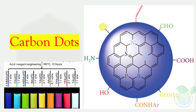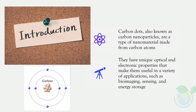Introduction. Carbon dots, also known as carbon nanoparticles, are a type of nanomaterial made from carbon atoms. They have unique optical and electronic properties that make them useful in a variety of applications, such as bioimaging, sensing, and energy storage.